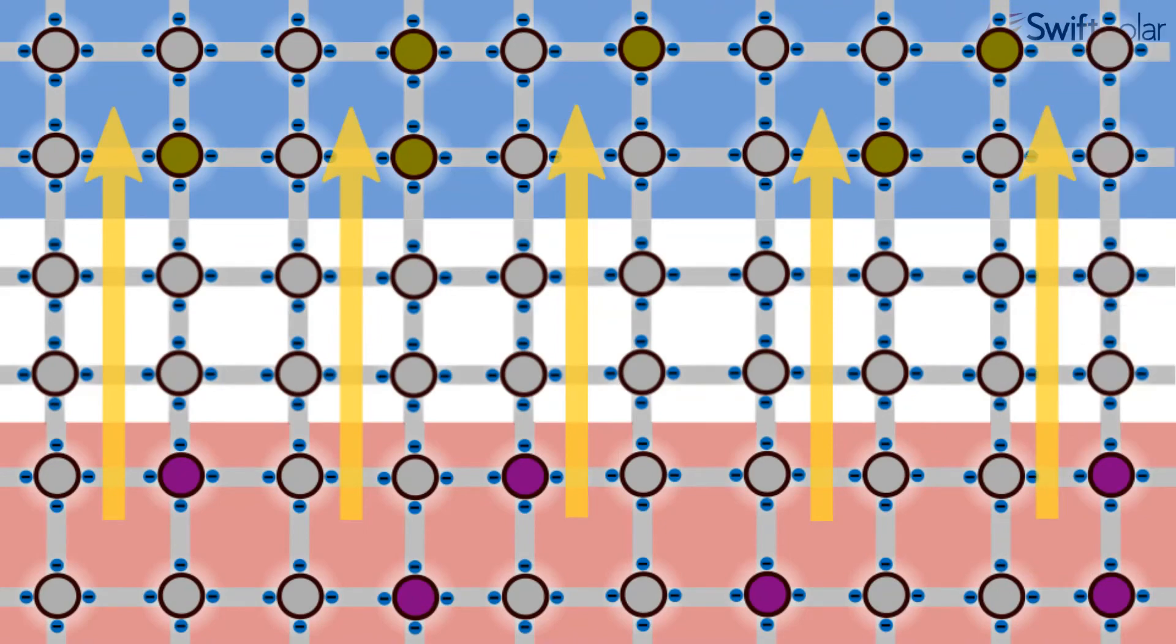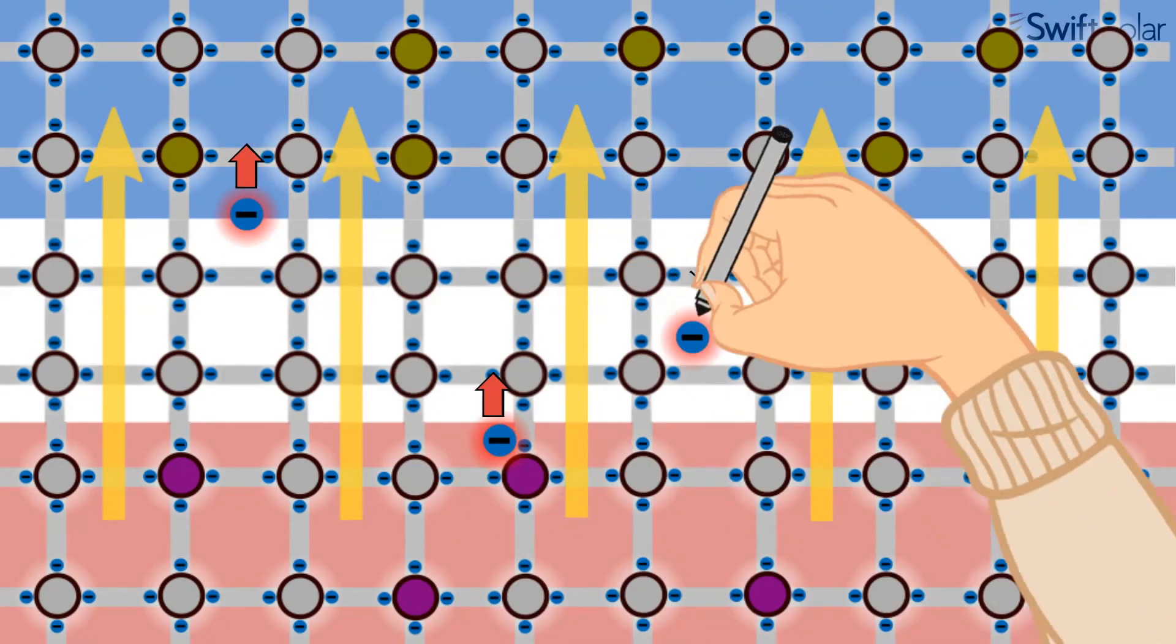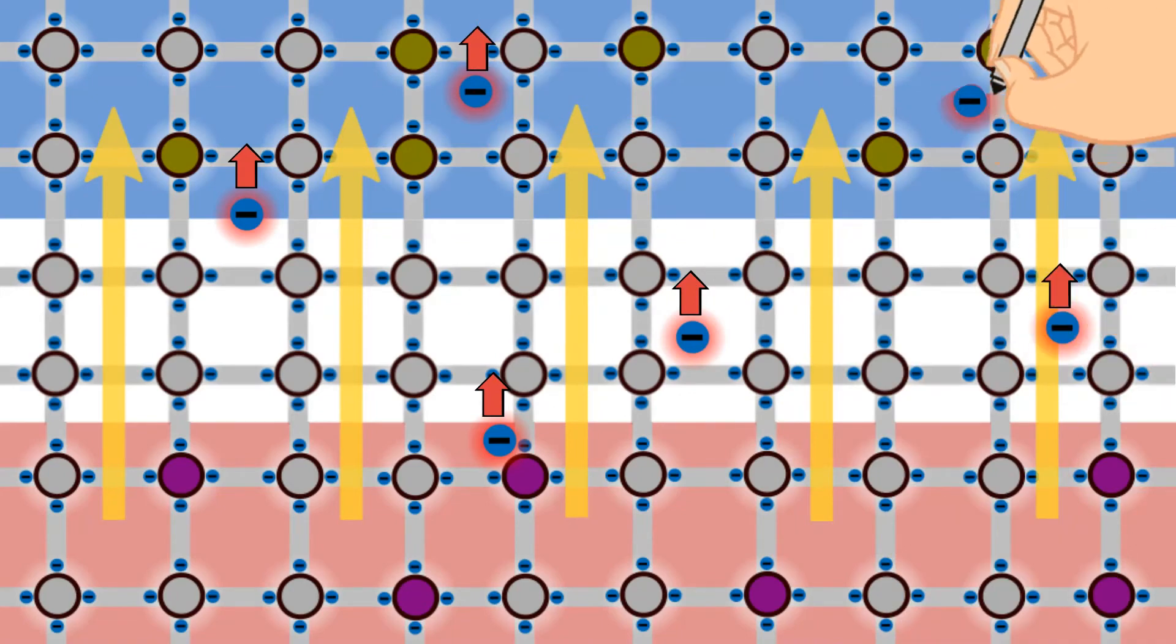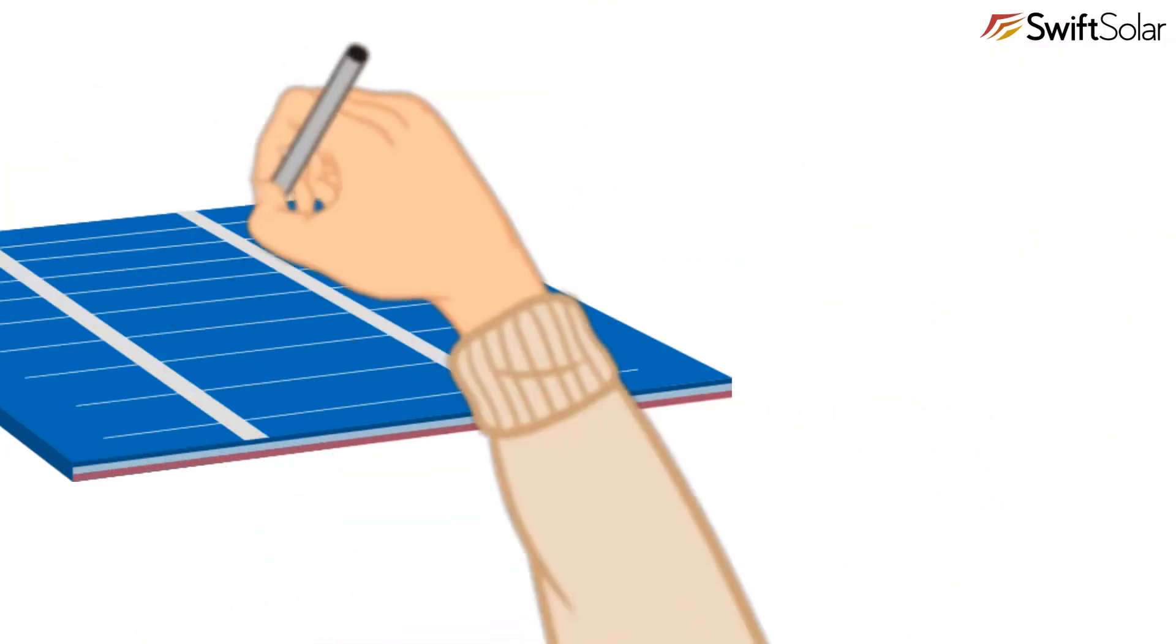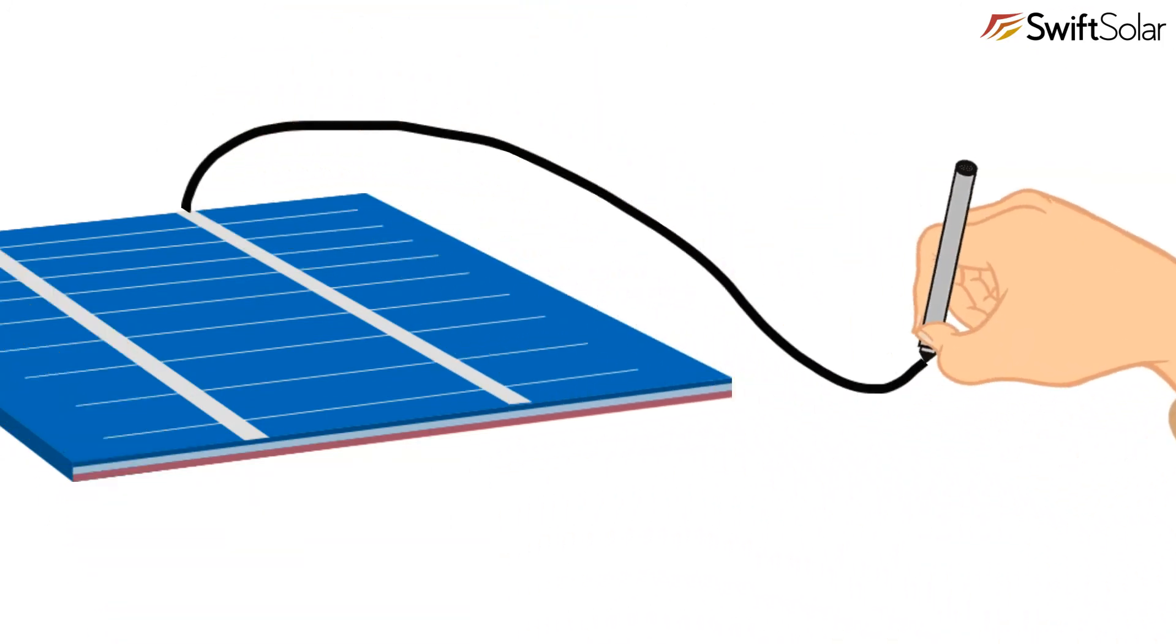This electric field pushes all the freed electrons in one direction. If we then attach wires to the solar cell, our electrons will get pushed down the wire. That's an electric current.